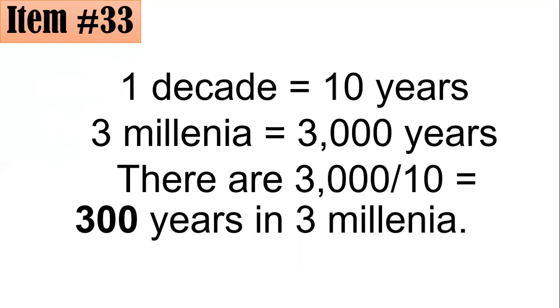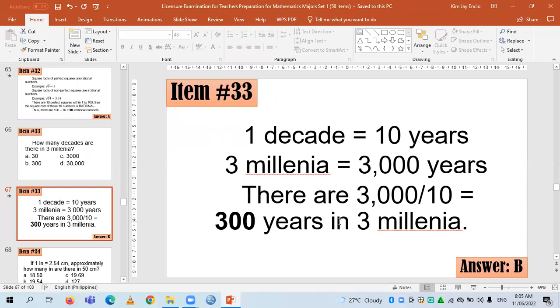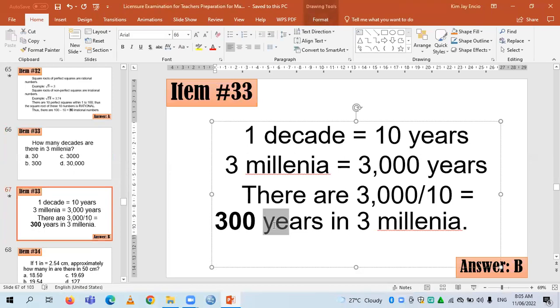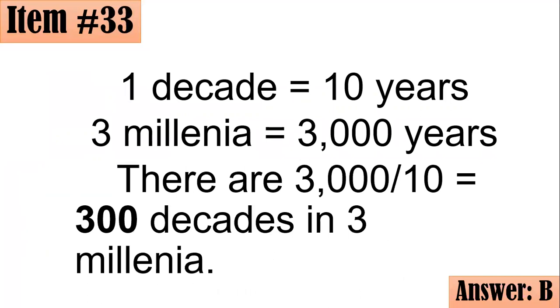Hence by division, we could say that there are 3000 divided by 10, or 300 decades in three millennia. So if you answered B, great job. Good thing I was able to find a certain error in the slide, so I have to change it from there.